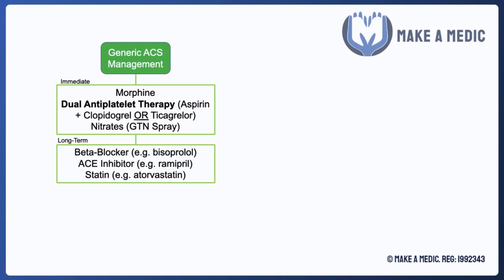For long-term management, a patient who has had an ACS will likely be discharged with several new medications. They will continue dual antiplatelet therapy at a lower dose. In addition, they will be discharged with a beta blocker, an ACE inhibitor, and a statin, all of which have been shown to improve long-term outcomes in patients with ACS.